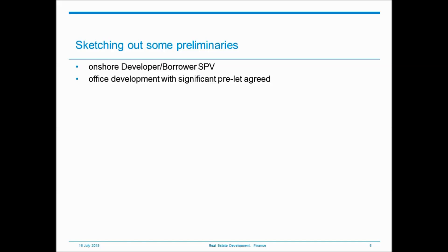Let's assume we're talking about an office development on a vacant site, and that a substantial proportion of this new office space is being pre-let to a tenant with a strong credit rating. The finance being used to fund the development is, as ever, a combination of equity and debt. The equity finance is being committed by two joint venture partners who have brought this whole development together.